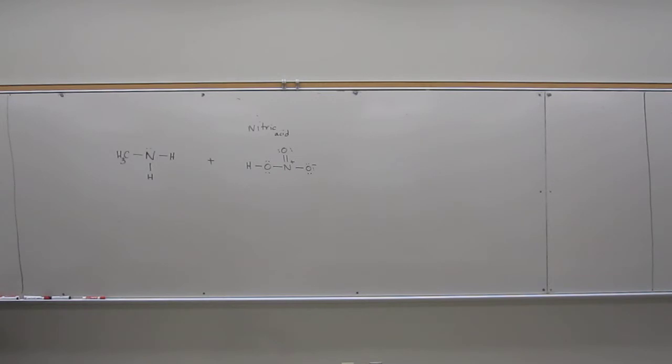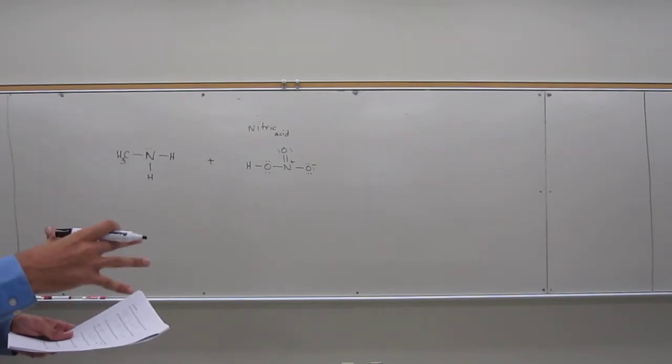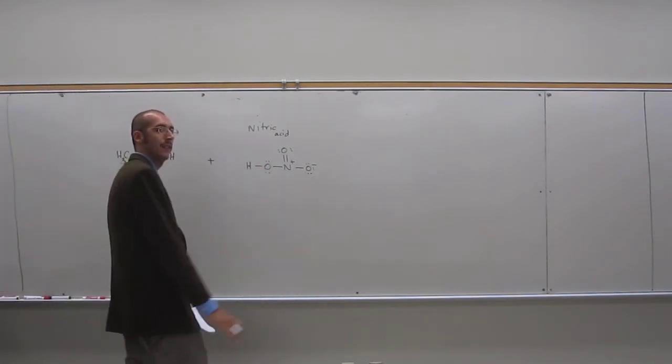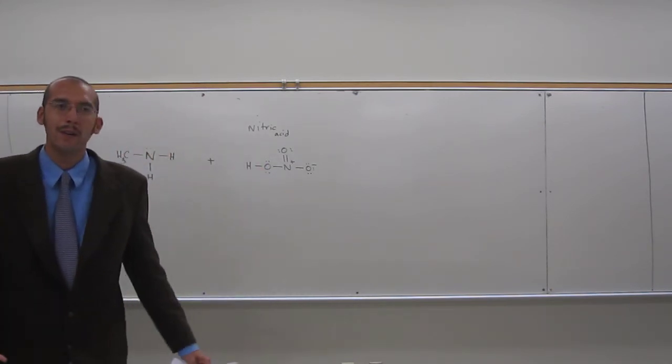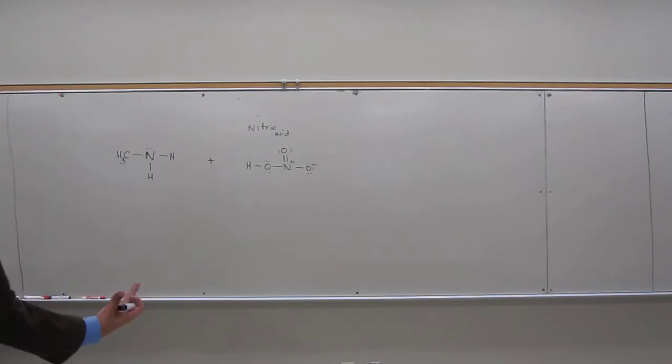So, what are the products of the following acid-base reaction? The first thing we need to do is definitely figure out which one's the acid and the base. We can qualitatively say, because this thing's nitric acid, that it's the acid, right? But we're not really certain about that. How do we figure that out?